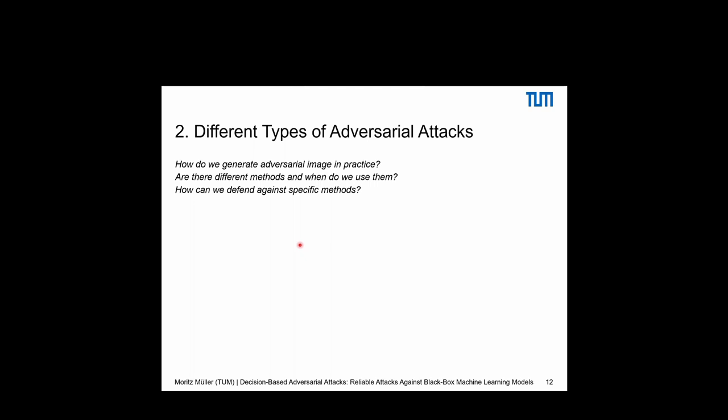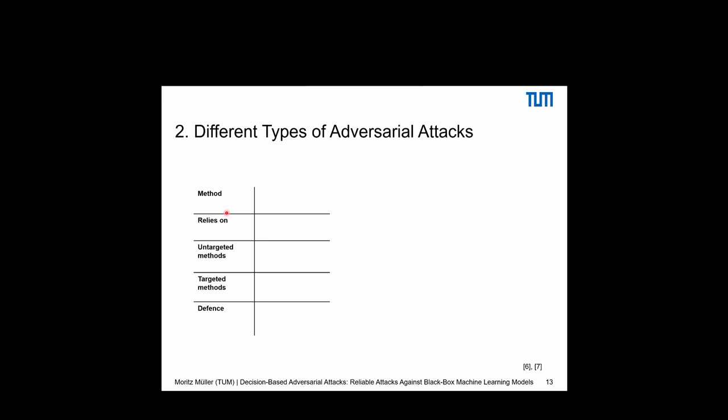We are interested in the different types of adversarial attacks, because as posed at the beginning, the goal of the attacker is to construct those attacks — and there are different methods, so there also exist different defense mechanisms. We will compare the types by their methods, what they rely on, the specific computer vision methods, untargeted and targeted methods, and the defenses in each class.